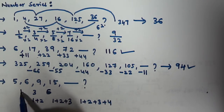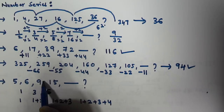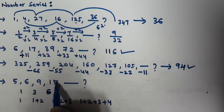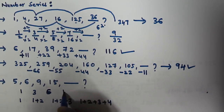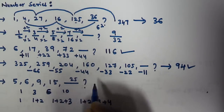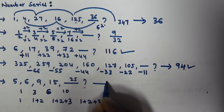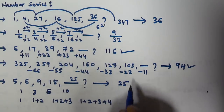So we add 10 to 15. Checking: 5 plus 1 is 6, 6 plus 3 is 9, 9 plus 6 is 15, and 15 plus 10 is 25. So the next term coming in this series is 25.